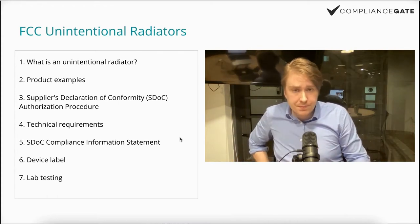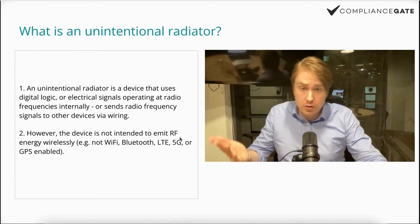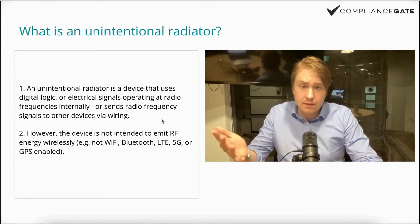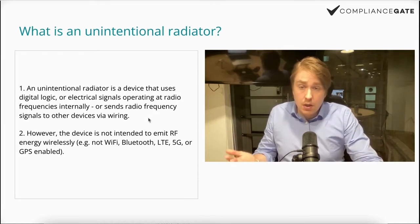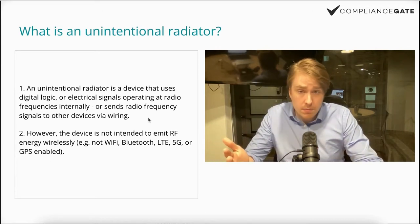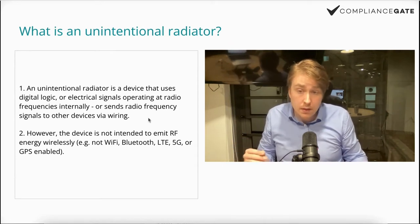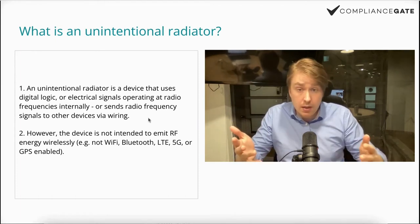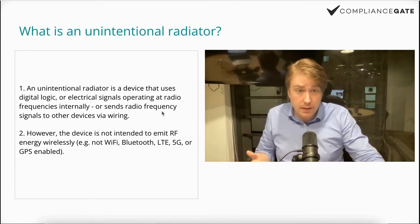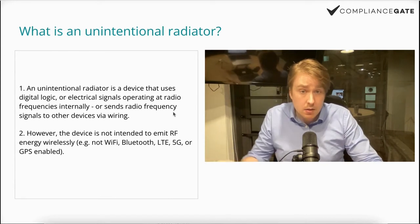So what is an unintentional radiator? An unintentional radiator is a device that uses digital logic or electrical signals operating at radio frequency internally, or sending radio frequency signals to other devices through wiring. It doesn't include devices that are intended to emit radio frequency energy wirelessly — so it wouldn't cover a Wi-Fi enabled device or a Bluetooth enabled device.